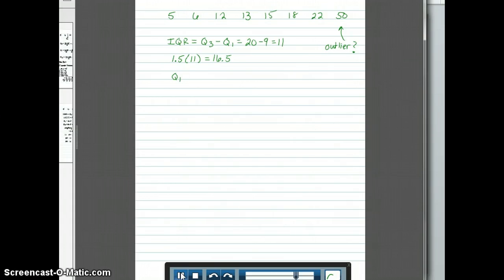Now we take the 16.5 and we subtract it from Q1. This is our first quartile. Remember Q1 from our example was 9 and from that we're subtracting 16.5. This gives us a negative value of negative 7.5.